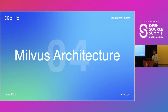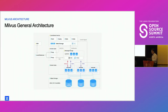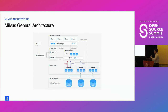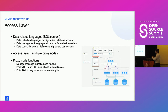Now let's talk about the Milvus architecture. From a high-level perspective you'll see several layers: the coordinator layer, the access layer, the worker layer, and the object storage layer. Before going through them, it helps to define some data-related terms. DDL — Data Definition Language — is used to modify or define the database schema. DML — Data Manipulation Language — is used for storing, modifying, deleting, and retrieving data. DCL — Data Control Language — manages user rights and permissions.